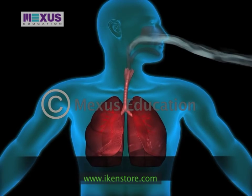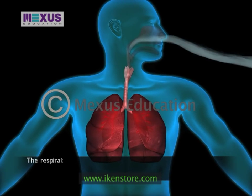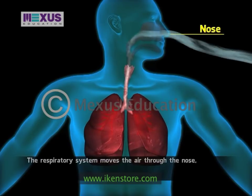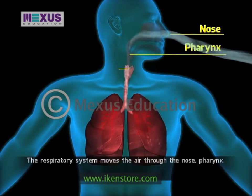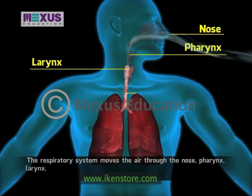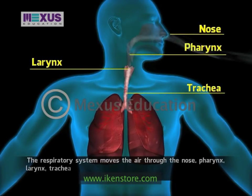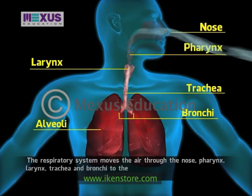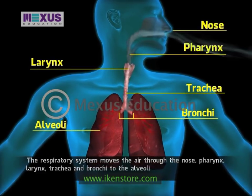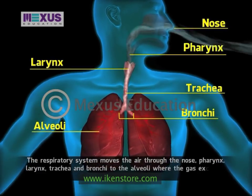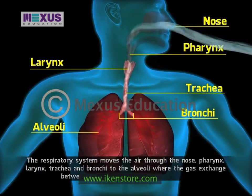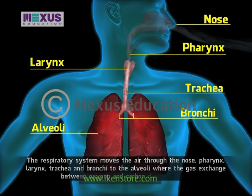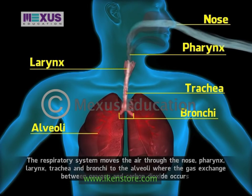The respiratory system moves air through the nose, pharynx, larynx, trachea, and bronchi to the alveoli, where gas exchange between oxygen and carbon dioxide occurs.